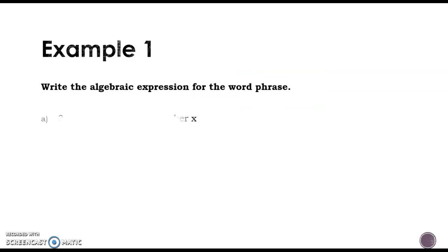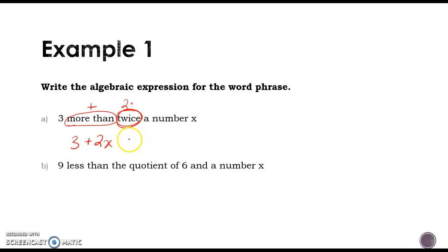Here's our first one: three more than twice a number x. So we've got a couple things going on here. We have more than, we have the word twice, and then we have our three and our x. So more than means addition, and twice means two times. So I know I'm going to have three plus two times x, and there's our answer for that one. And that's all that we're doing. It would also be okay to also write 2x plus 3. Both of those are the same.